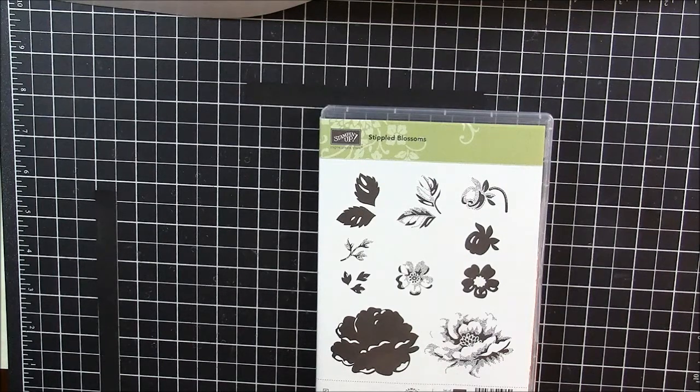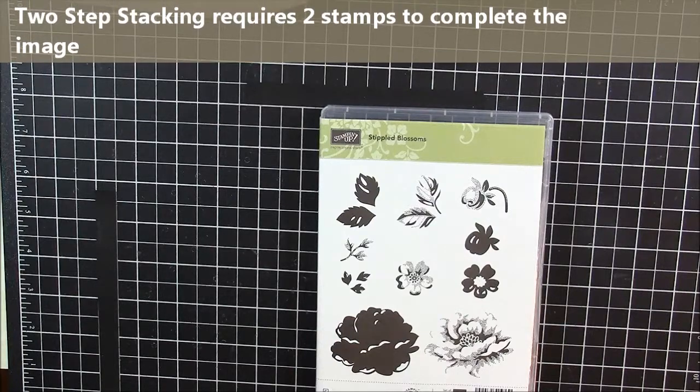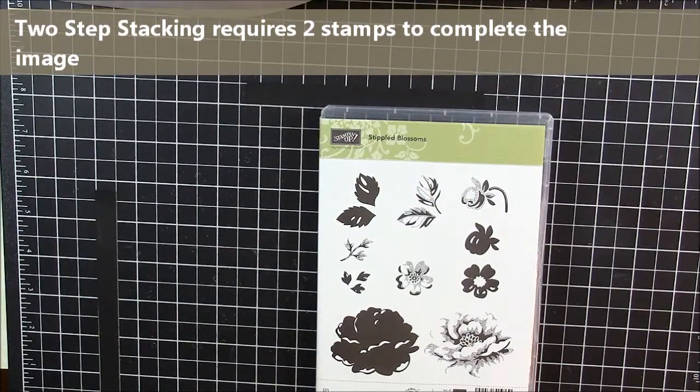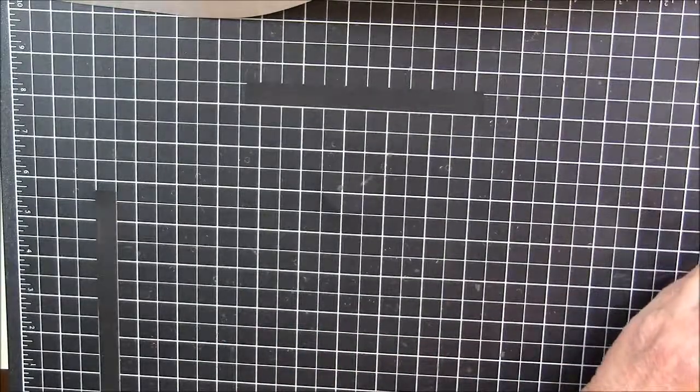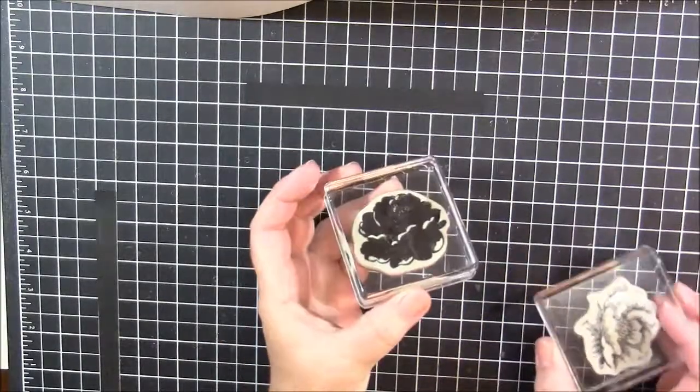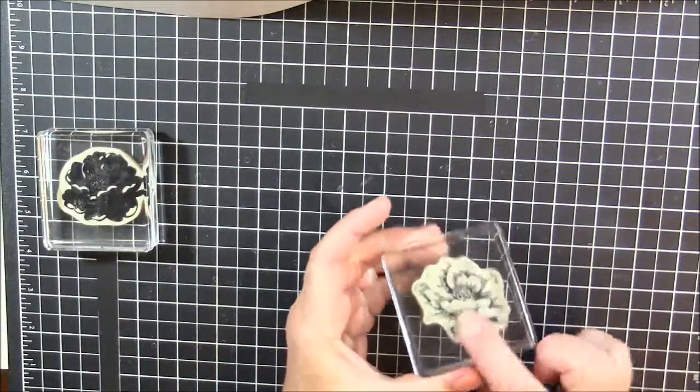The two step stacking requires two stamps to complete an image. There's a solid stamp for the base and a detail stamp that goes on top. Today I'm going to be using the Stipple Blossoms and I'm going to be doing the larger image. Here's the solid base stamp and then here's the top detail stamp.